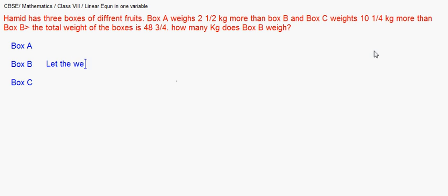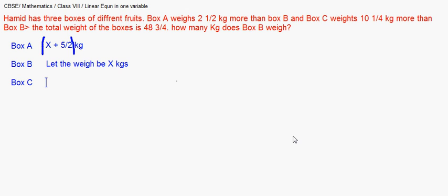So let us take box B as x kg. Box A weighs two and one-half kg more than box B, so box A will be x plus five-halves kg. Similarly, box C is ten and one-quarter kg — that is 41/4 kg — more than box B, so box C will be x plus 41/4 kg.